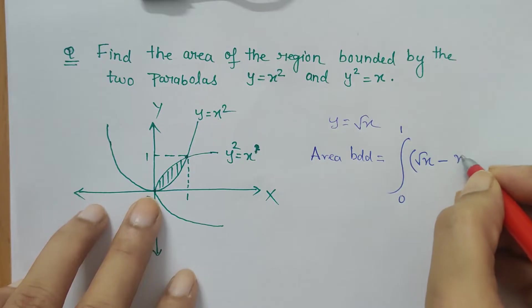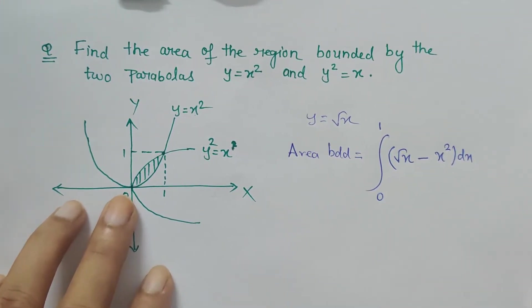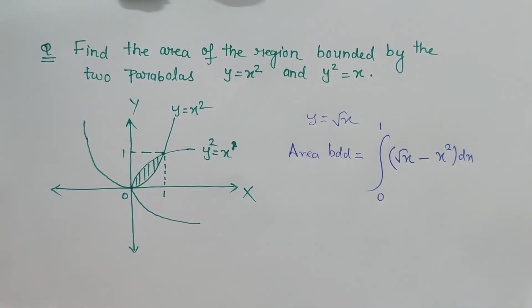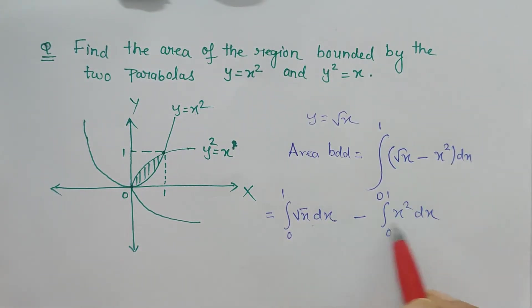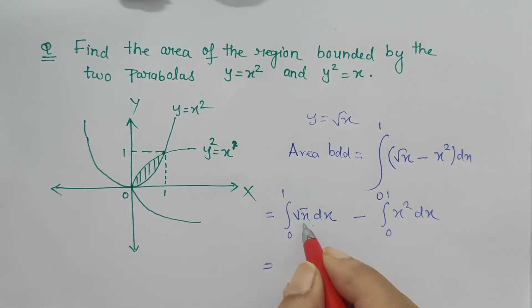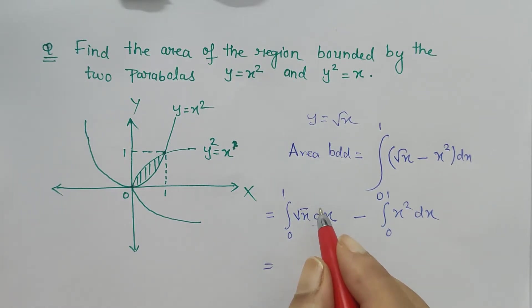Now it's just normal integration. For x to the power 1/2, the formula applied here is the general form x^(n+1)/(n+1), which gives us x^(3/2) times 2/3.